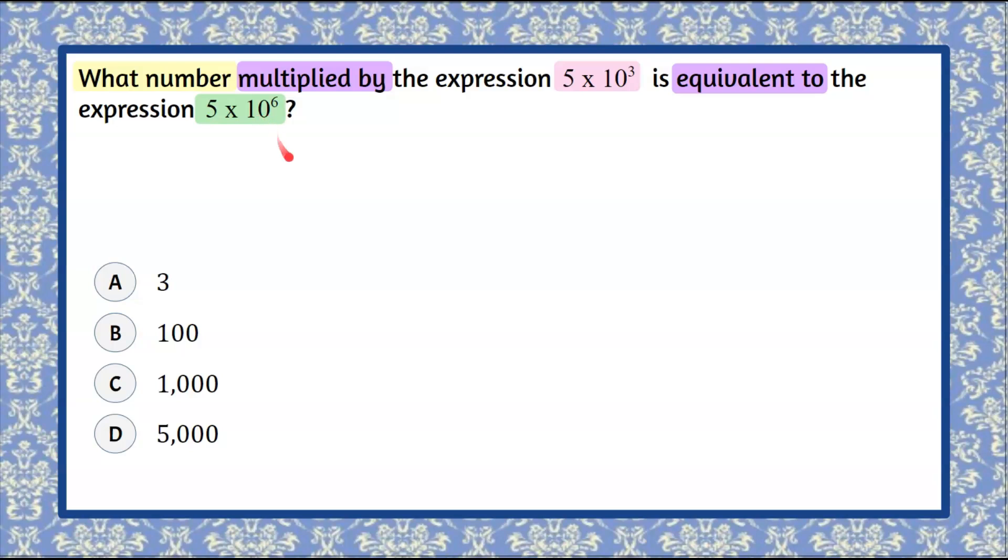So we want to know what number. We're looking to fill this in and we see one of these four is going to go in here, and then we're going to multiply that unknown number by this value in scientific notation. It's going to be equivalent to, equal to, this expression. Much easier to visualize and understand what we're trying to do here looking at this rather than this question.